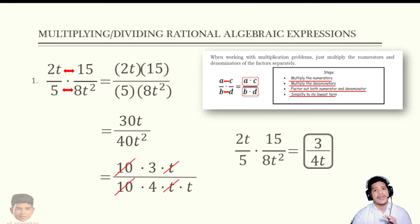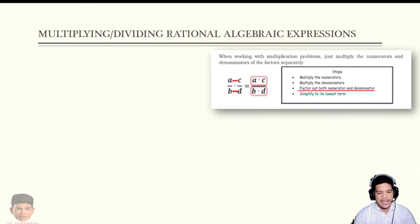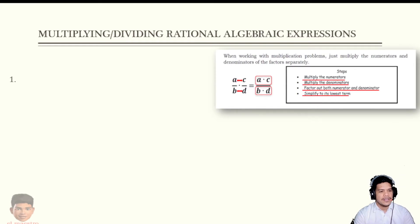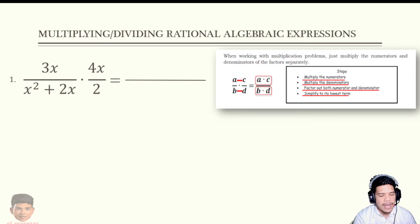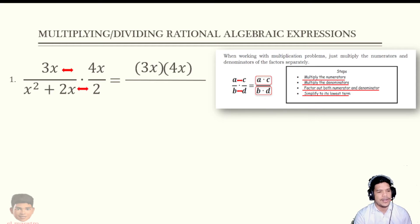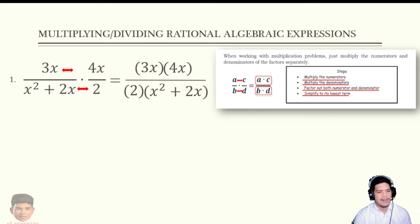That's how simply it works. Take note that later in division we will use this same rule of multiplication, so we must be very familiar with it. Let's have another example: 3x over (x squared plus 2x) times 4x over 2. First, multiply numerator to numerator: 3x times 4x. Denominator to denominator: 2 times (x squared plus 2x). The order of arrangement doesn't matter.